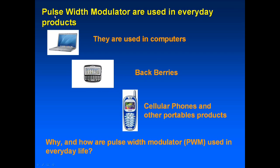PWMs, or pulse width modulators, are in just about any products. They're used in computers, Blackberries, cellular phones, and so forth. Why and how are pulse width modulators used in everyday life? What are the functions?